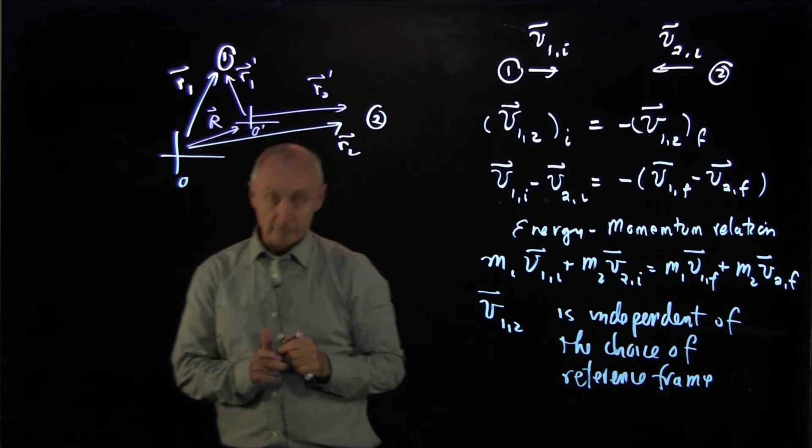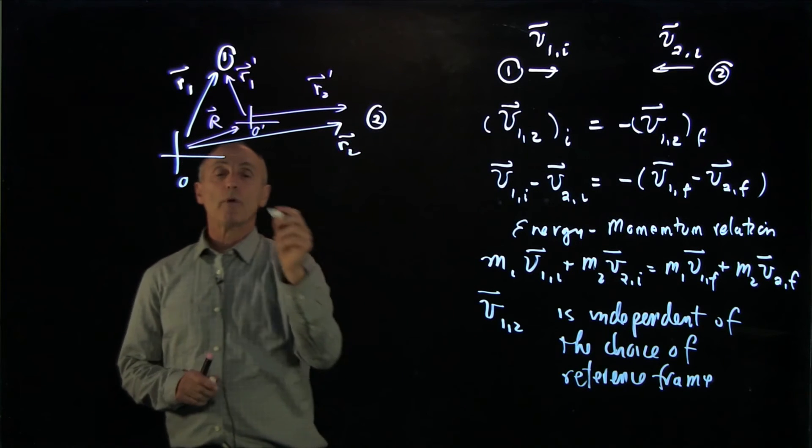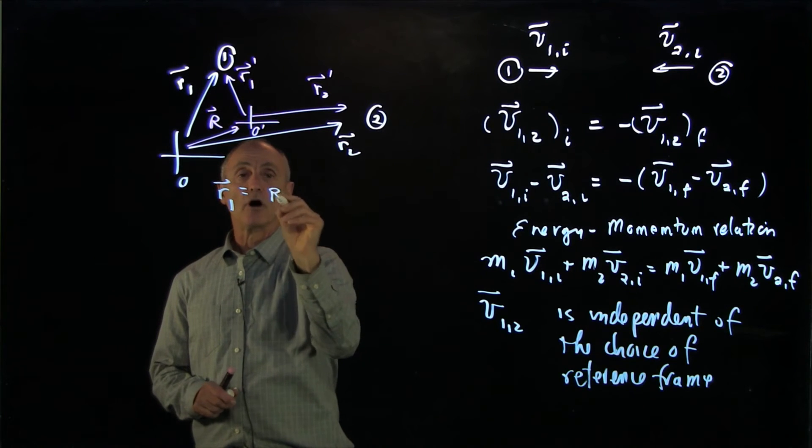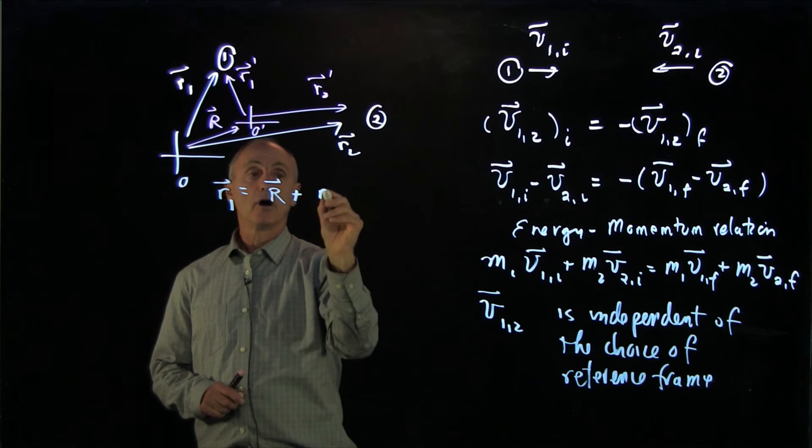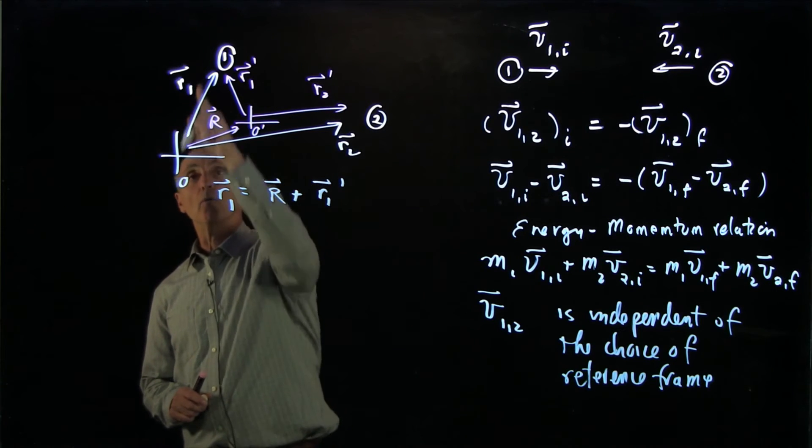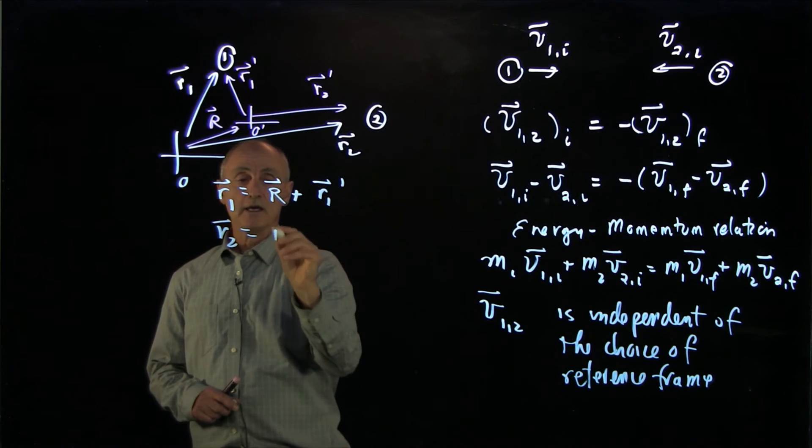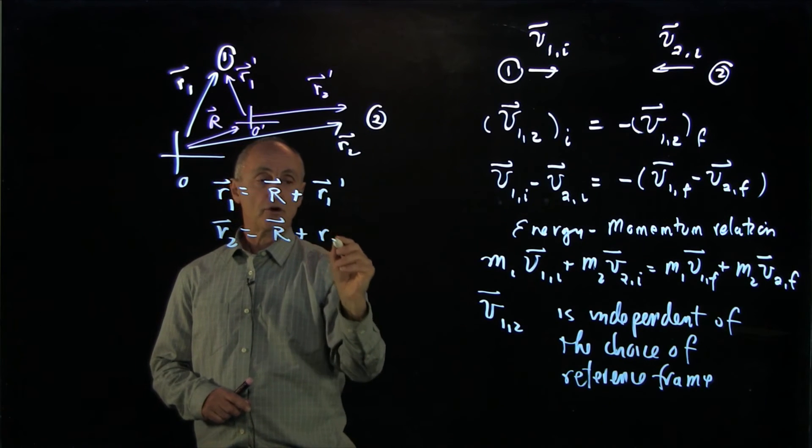And the relative vector from the center of one reference frame to the center of the other reference frame. So what we have are the two conditions that r1 is equal to capital R plus r1 prime. r2 is capital R plus r2 prime.